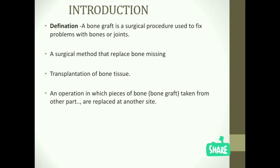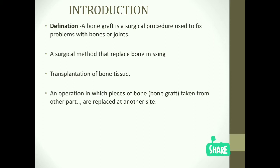Starting with the basics: a bone graft is a surgical procedure used to fix problems with bones or joints. It is a surgical method that replaces missing bone — the transplantation of bone tissue. It is an operation in which pieces of bone, called the bone graft, are taken from one part of the body and placed at another site.